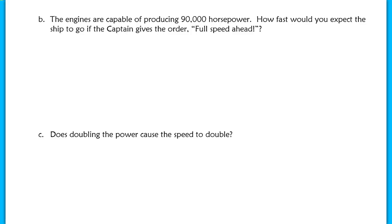In part b, it says the engines are capable of producing 90,000 horsepower. How fast would you expect the ship to go if the captain gives the orders full speed ahead? In this case, we want to max out the horsepower, which is 90,000. So we want to know what is the speed when the horsepower is 90,000. So we're inputting 90,000 into our function. Make sure that you are entering it using the k value that you stored. So you're going to hit k times the seventh root of 90,000. And in your calculator, you should end up with approximately a speed of 33.1 knots.